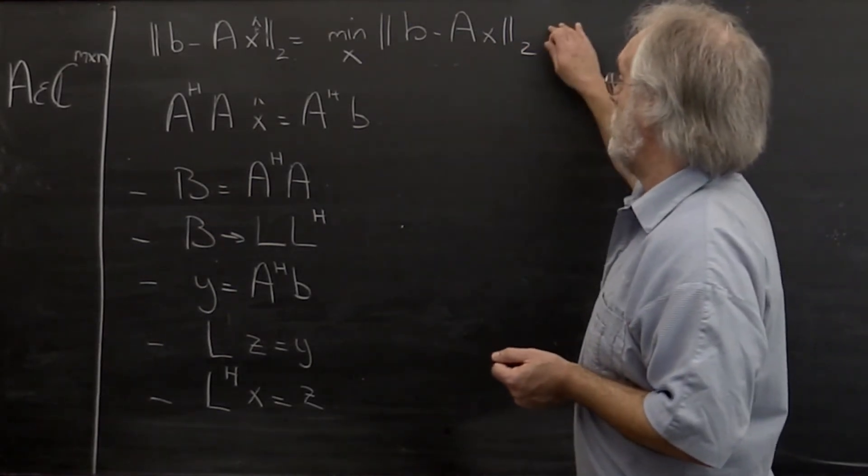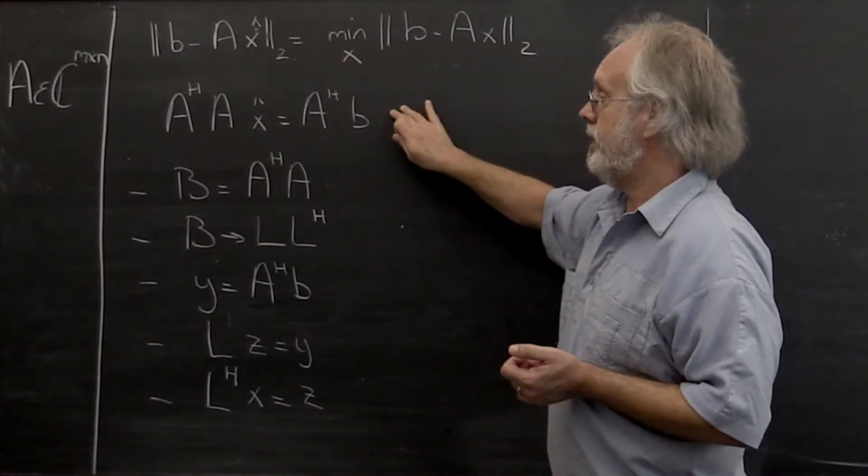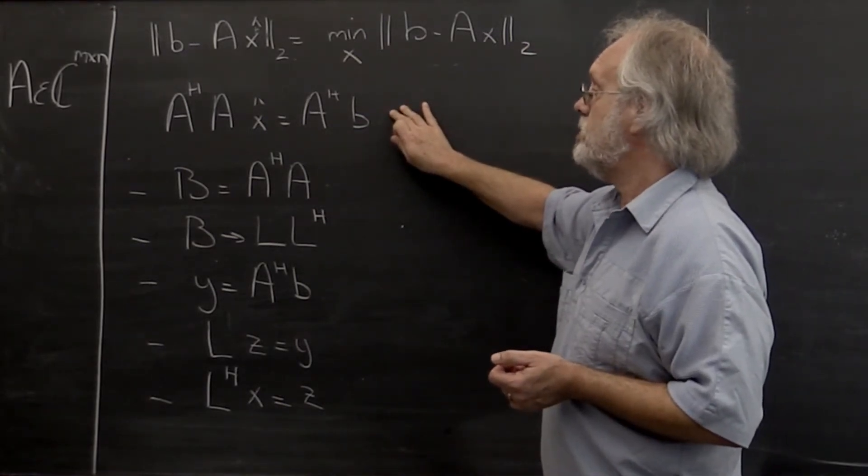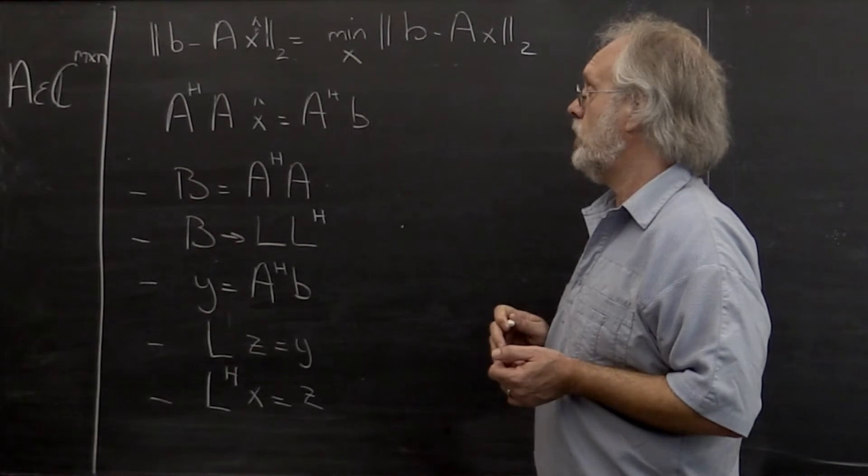So here's the linear least squares problem. And we remember that if A has linearly independent columns, then we can use the method of normal equations to solve this.